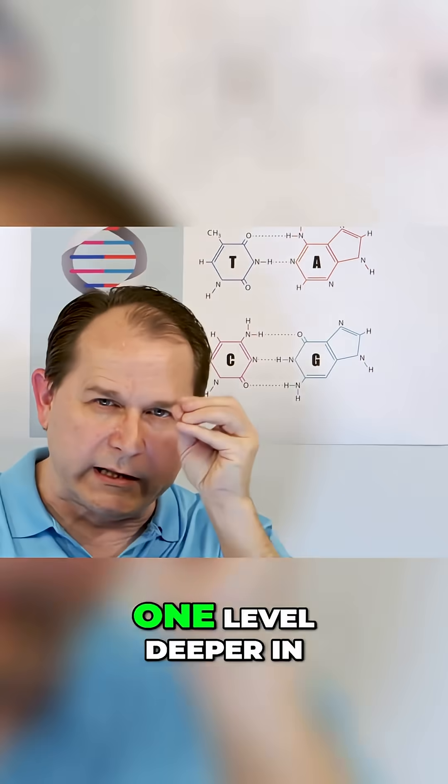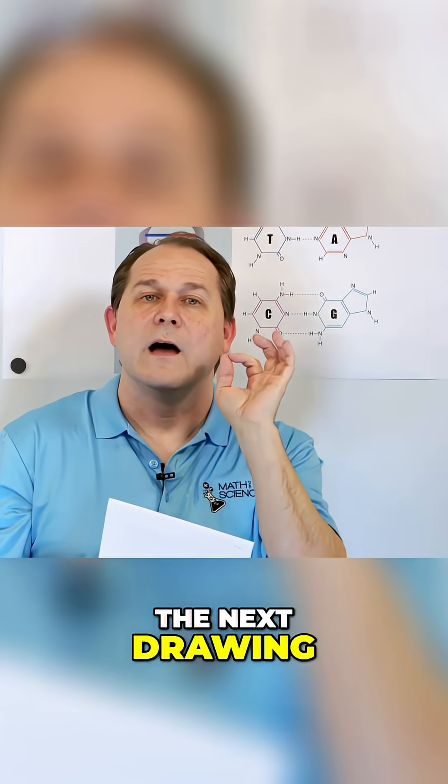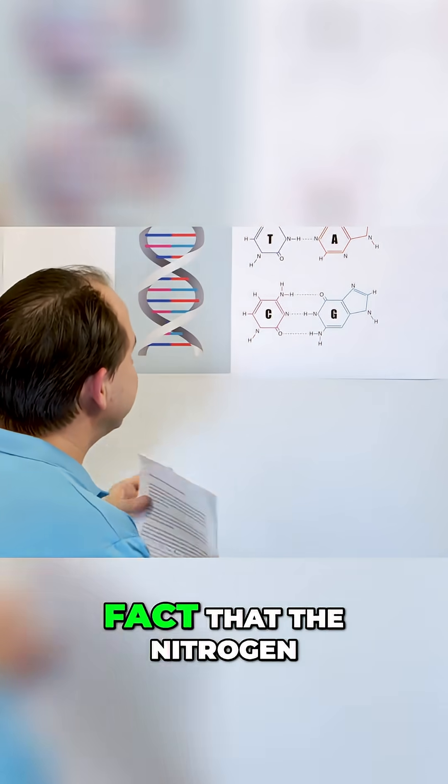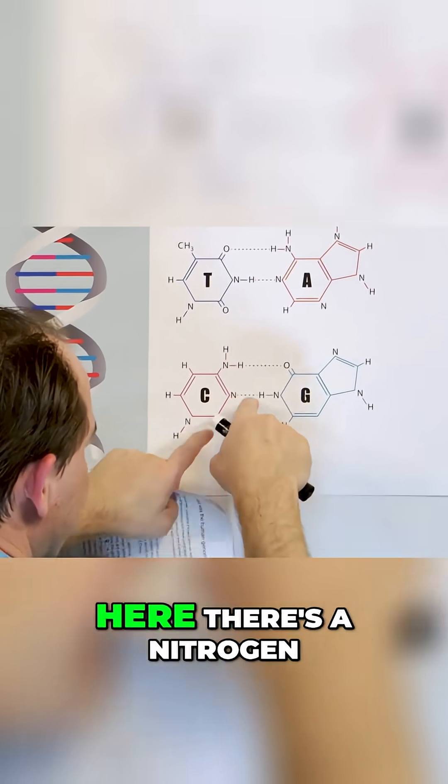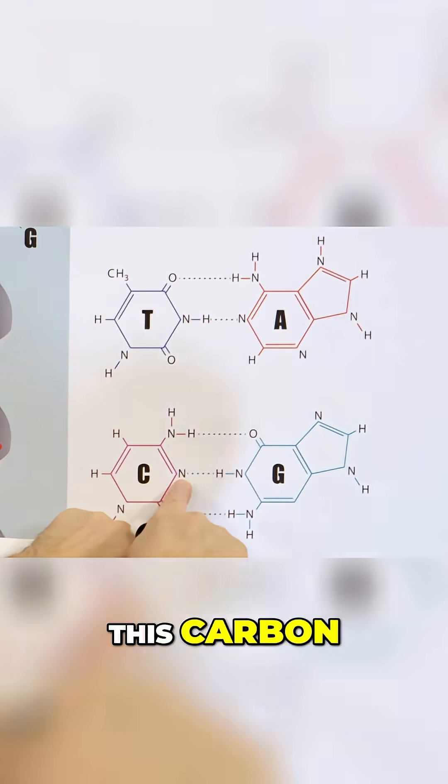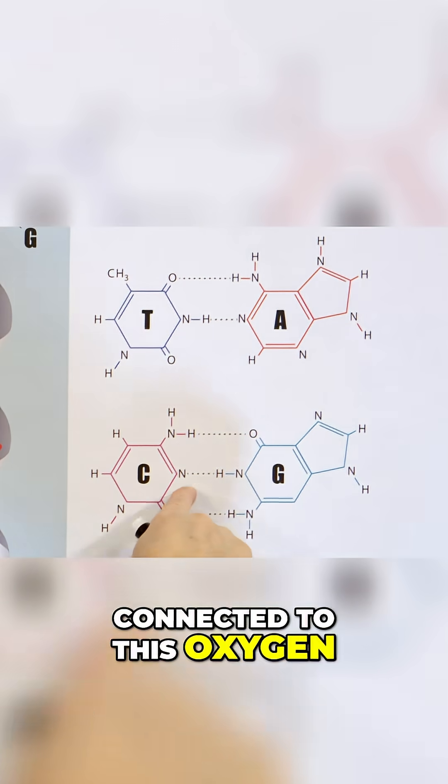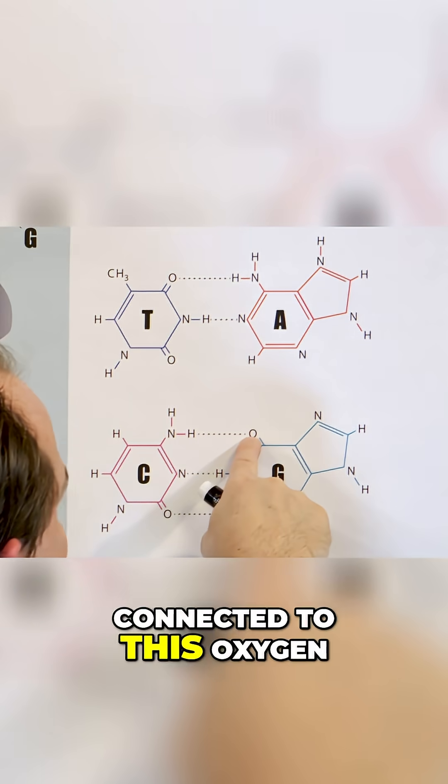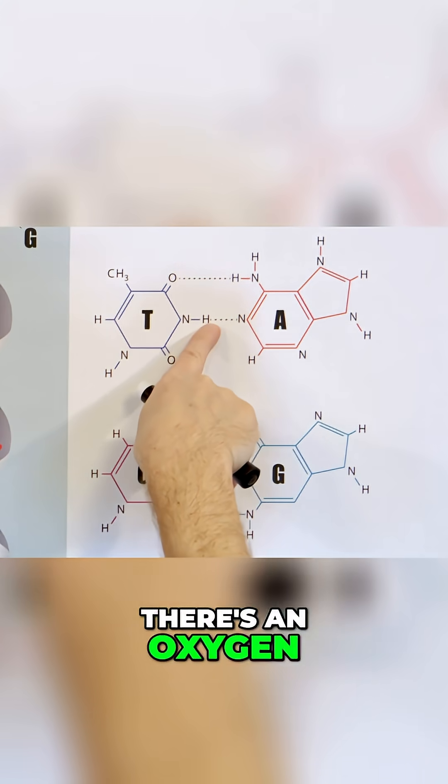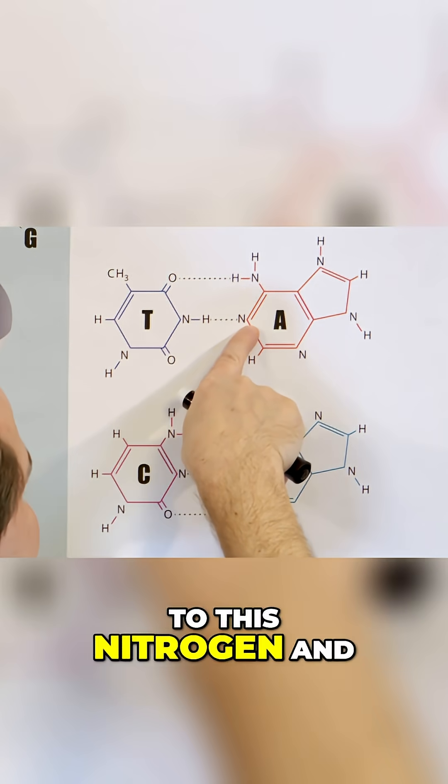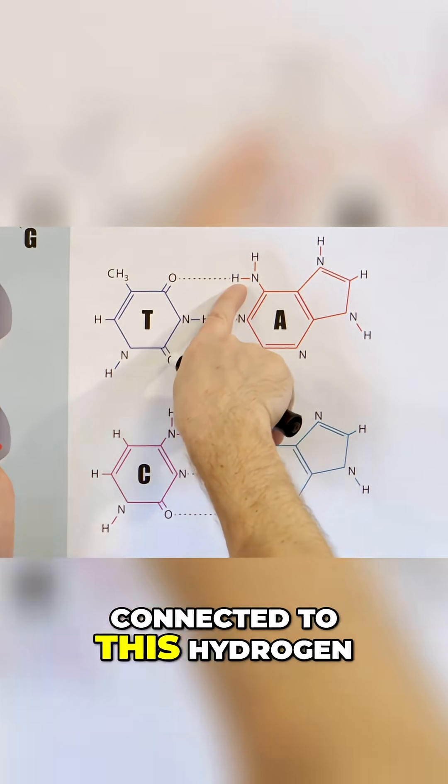But before we dive one level deeper in the next drawing, I want to call your attention to the fact that there's a nitrogen atom hanging off of this carbon. It is connected to an H, hydrogen. There's a hydrogen here connected to this oxygen. There's a hydrogen here connected to this oxygen. There's a hydrogen here connected to this nitrogen, and there's an oxygen here connected to this hydrogen.